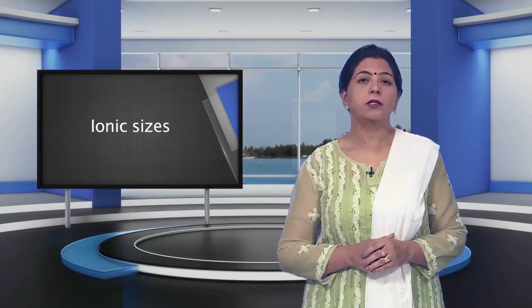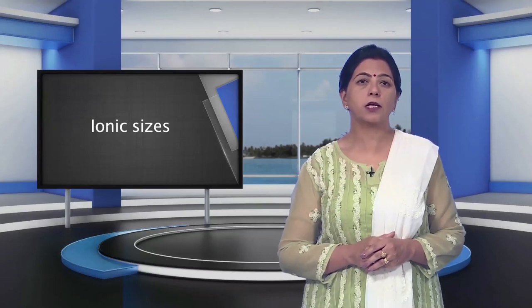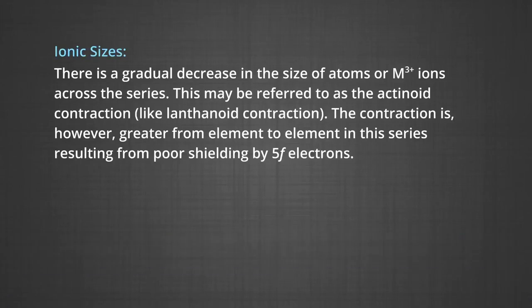The general trend observed in the lanthanides is observable in the actinides as well. There is a gradual decrease in the size of the atoms or M³⁺ ions across the series, referred to as the actinide contraction, just like the lanthanide contraction. The contraction is, however, greater from element to element in this series, resulting from the poorer shielding effect by 5f electrons.